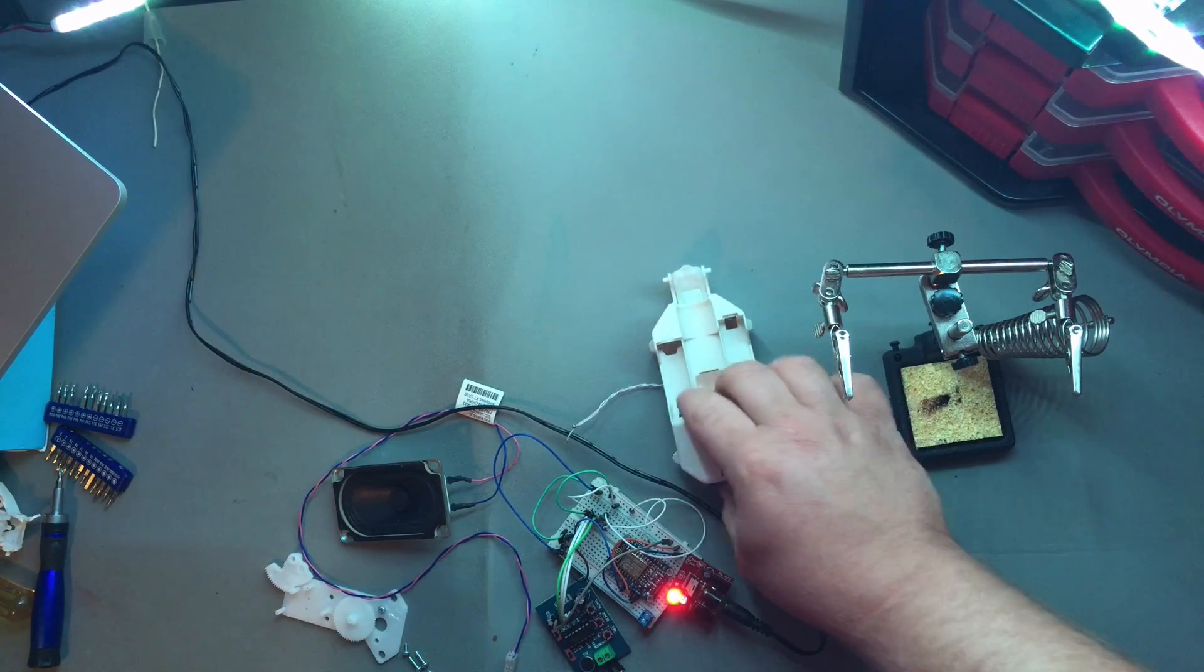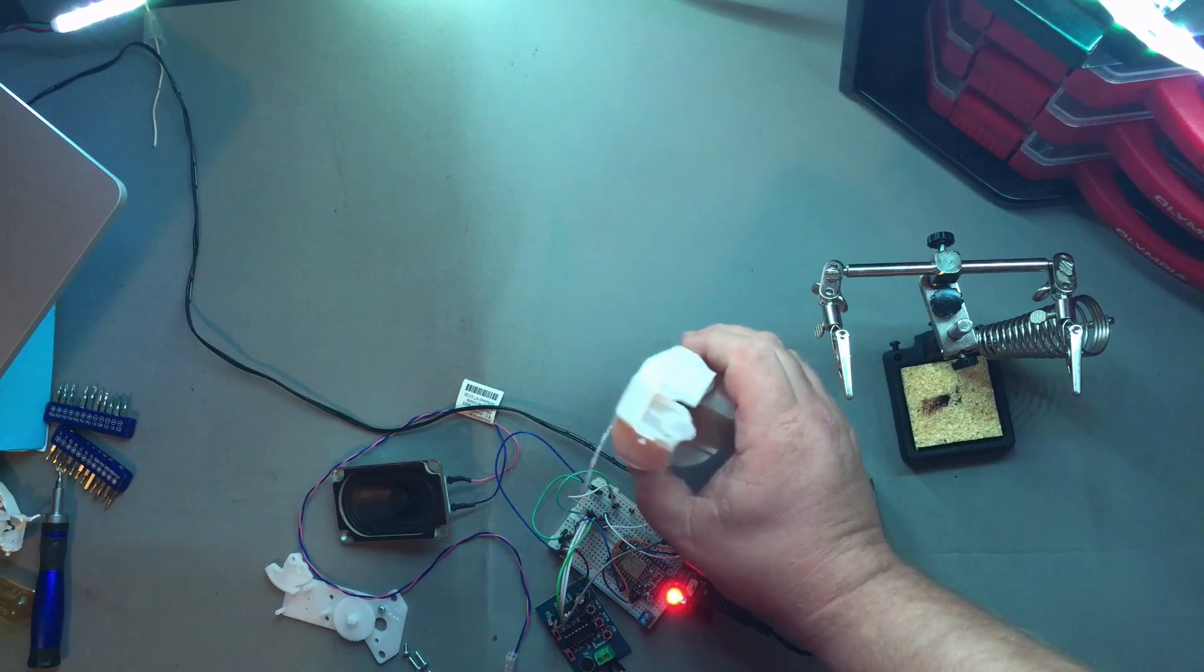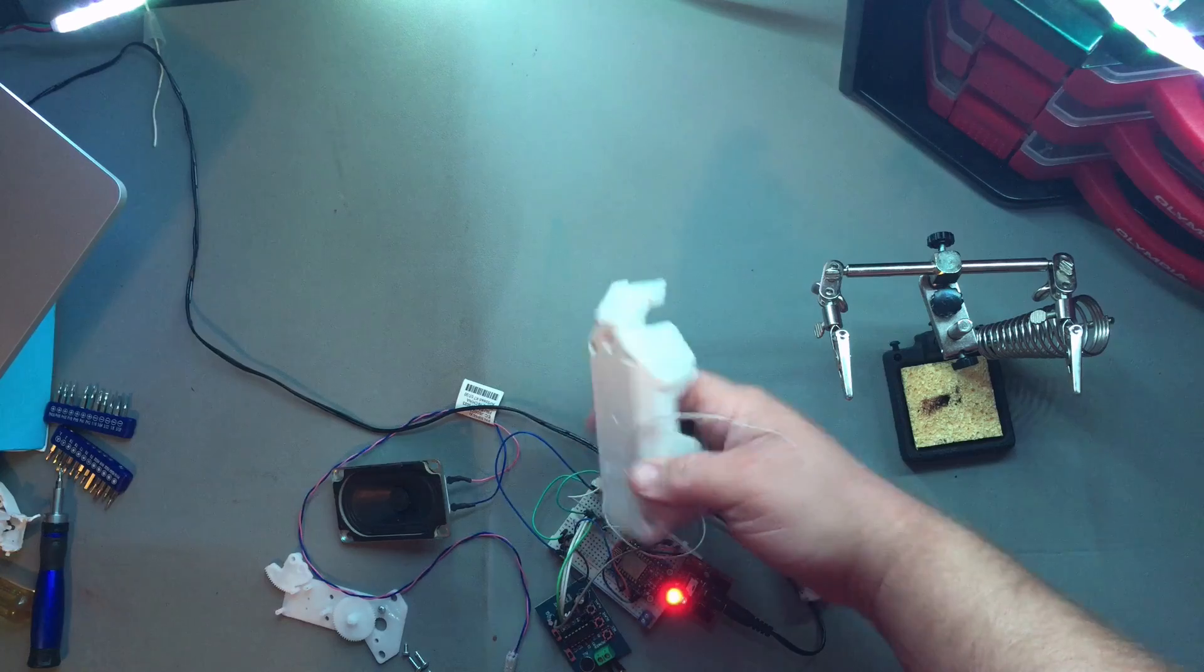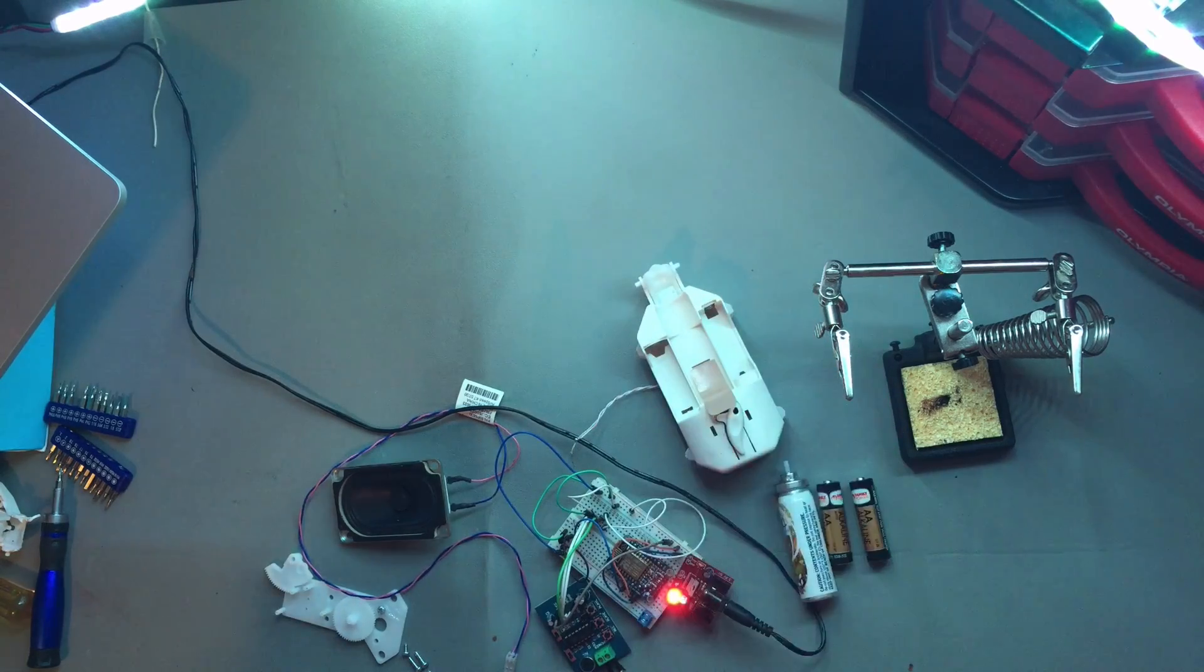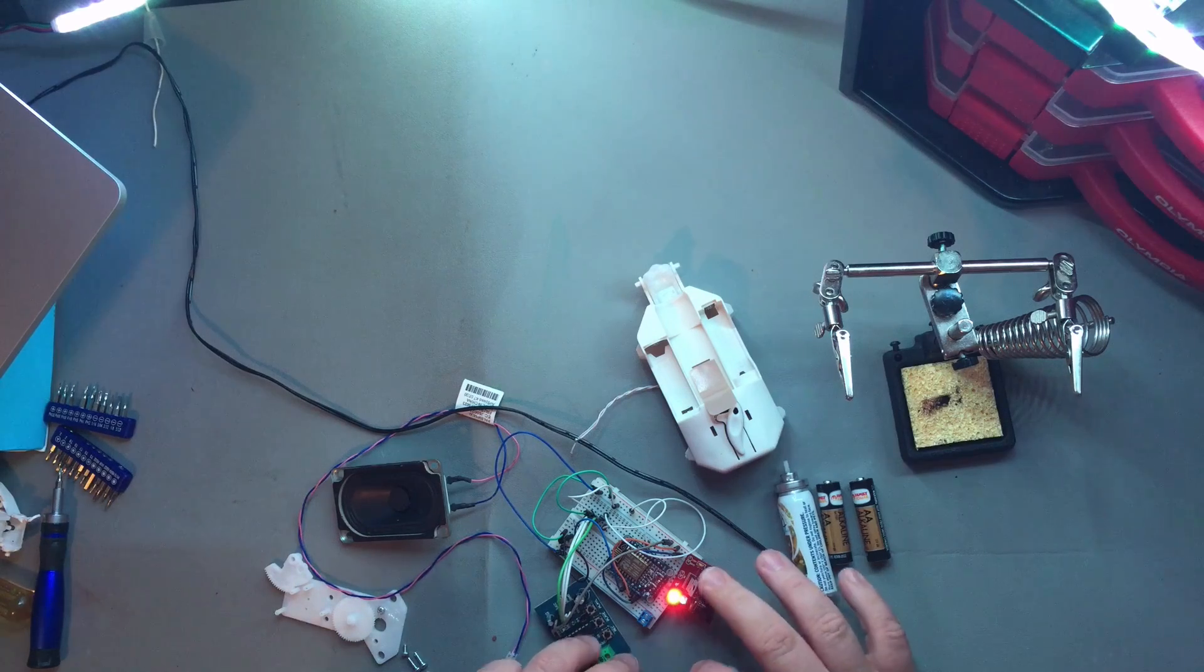And then the Glade autosprayer, this is the smaller kind. They also have a larger version of this. And these are the internals to another one so that I could show you the modifications that I did.